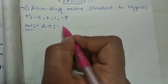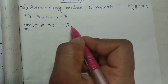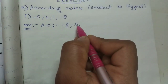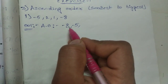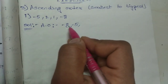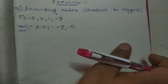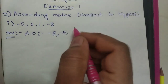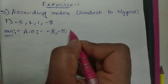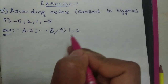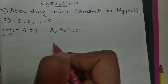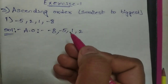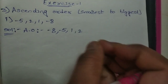Which negative number has the biggest digit? That one is the smallest integer. So minus eight is the smallest integer, after that minus five. When we compare these two, minus eight is the smallest and minus five is the biggest among negatives. Then one, comma two. So the ascending order is: minus eight, minus five, one, two.